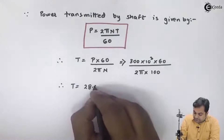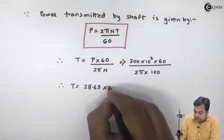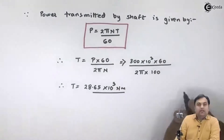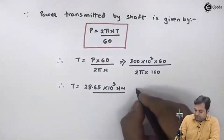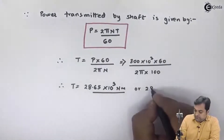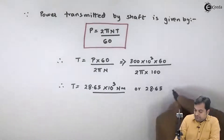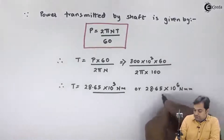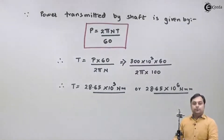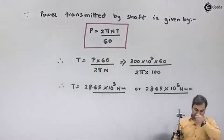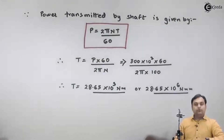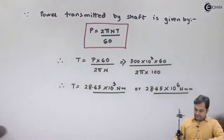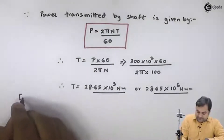The value of torque comes out to be 28.65×10³ N·m, which I will convert to Newton millimeters: 28.65×10⁶ N·mm. So the first step was to calculate the torque; once we know the torque, we can find the diameter for the solid shaft.